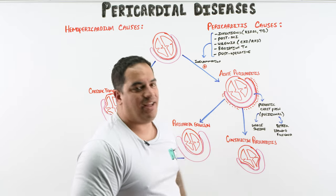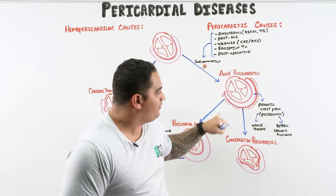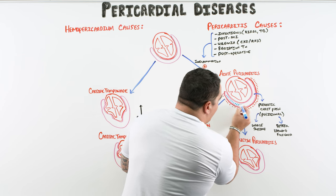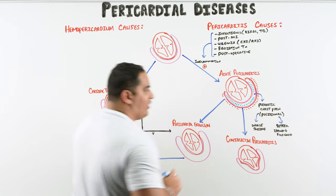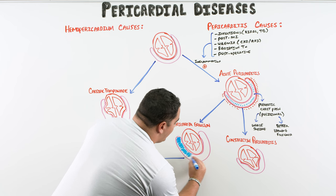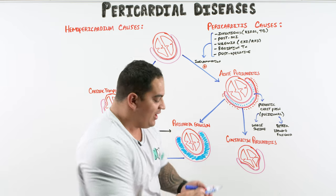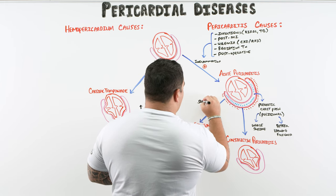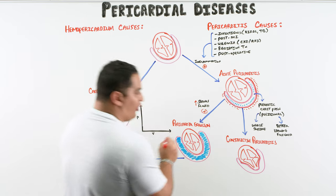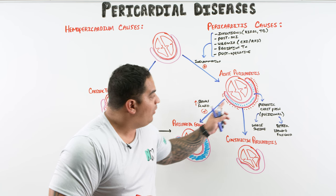When the pericardium becomes inflamed, sometimes the visceral and parietal epithelial cells start secreting fluid that accumulates in the pericardial cavity. Normally there is a little fluid, but if a lot accumulates and exceeds the upper limit of normal, it's called a pericardial effusion. So acute pericarditis can lead to a pericardial effusion by inflaming the pericardium and causing it to produce more serous fluid.